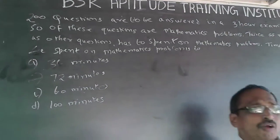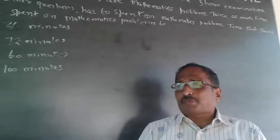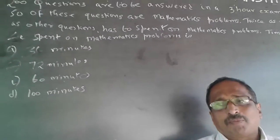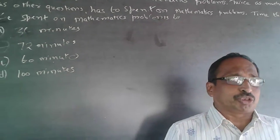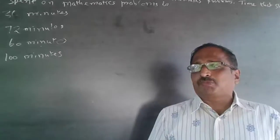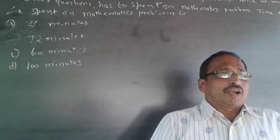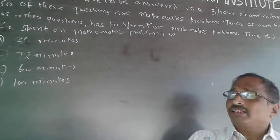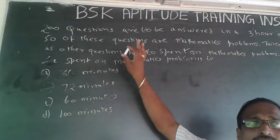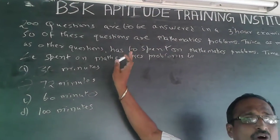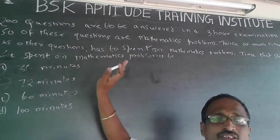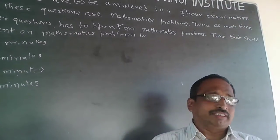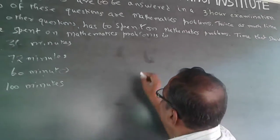This problem can be treated as a ratio problem, though it's not purely a proportional or ratio problem. What it says is: 200 questions are to be answered in the examination, of which 50 questions are math questions, and for each math question you can take twice the time.